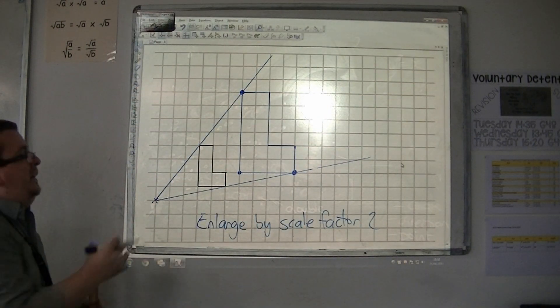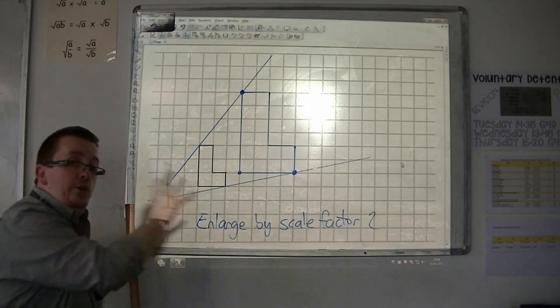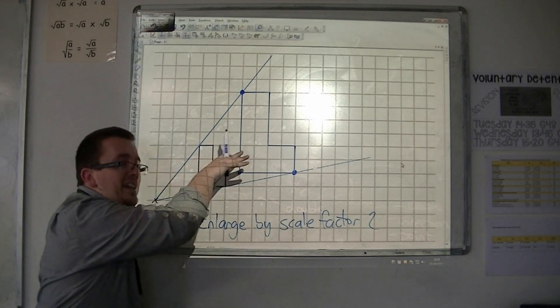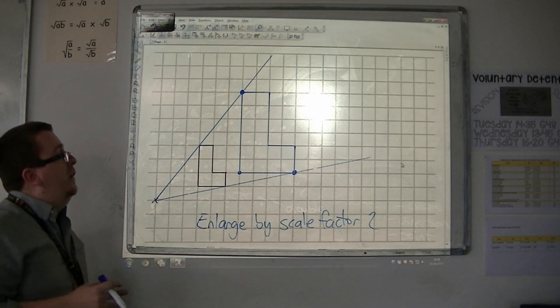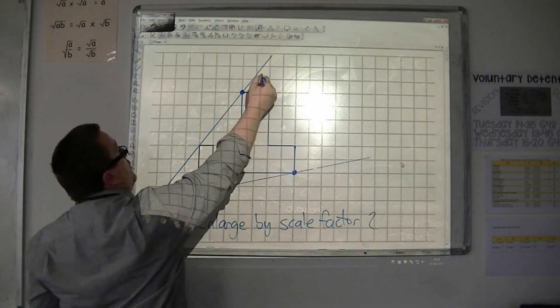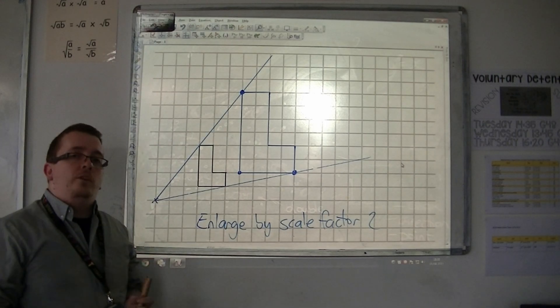So this is how we draw the shape in a particular position using the centre of enlargement. This is actually how perspective drawing is done. So if you want to draw someone who is in the distance, you can use these lines to get the correct height and proportion of those people.